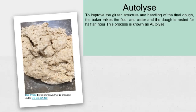Next word is autolyse. To improve the gluten structure and handling of the final dough, the baker mixes the flour and water while making the artisan bread, and this dough is rested for half an hour. This process of mixing the flour and water and resting it for half an hour is known as autolyse. This process is mostly adapted while making artisan bread.